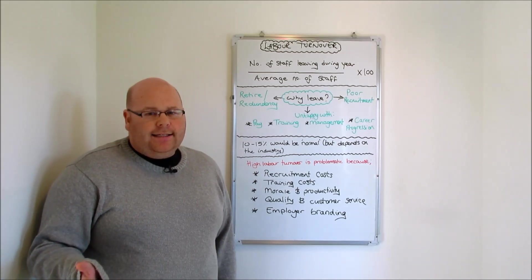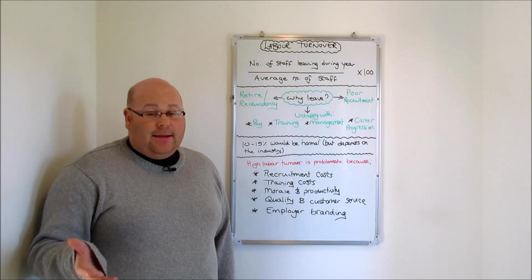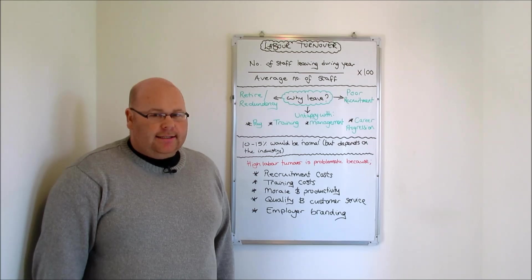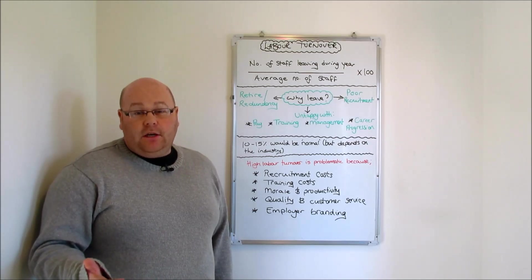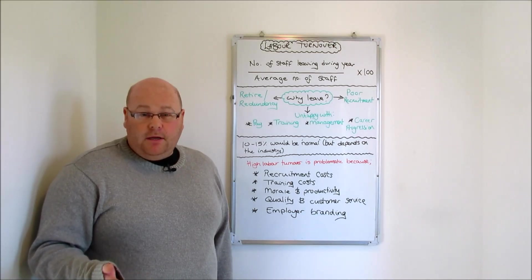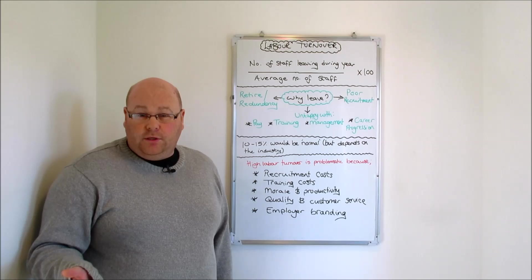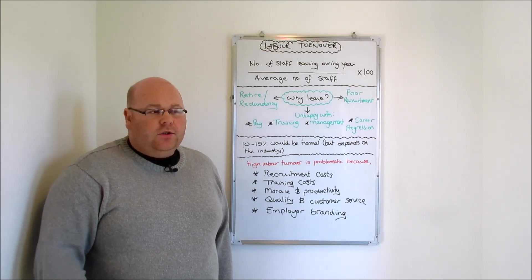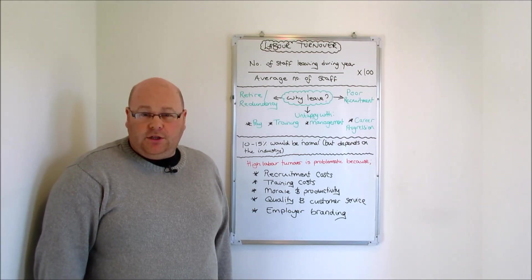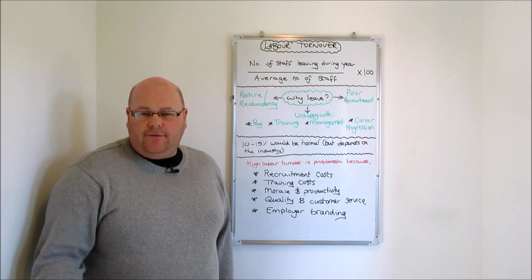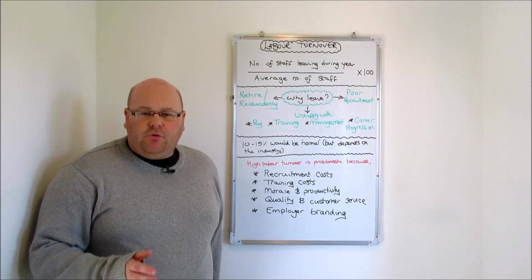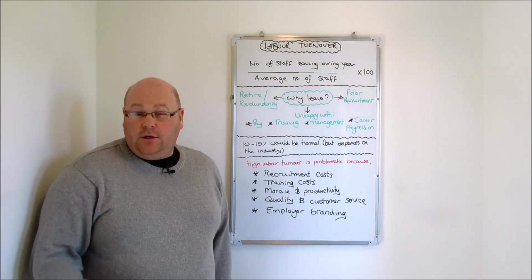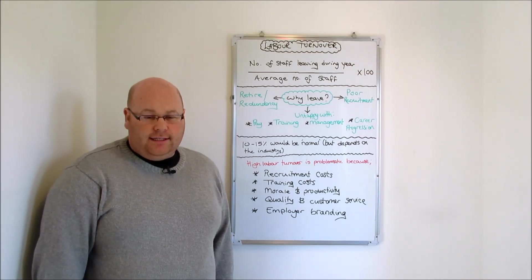There can also be some quite negative connotations for the organisation if our labour turnover figure is too high because it might affect the people who are left behind and haven't exited the organisation. If we've got high labour turnover because of things like redundancy, then it might mean that the people left behind are very fearful for their own job security and it affects their morale. Or if it's because of the unhappiness of staff, others who are left behind might start considering their own position and wonder why so many of their colleagues might have left during the last year. So it can certainly affect the productivity and morale of our existing workforce that are left behind when too great a percentage leave during the same year.